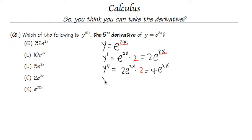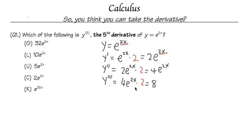For the third derivative, we start with 4e^(2x) and multiply by the derivative of 2x, which is once again 2. You can see a pattern forming here — it's kind of fun. So 4 times 2 is 8, giving us 8e^(2x) for the third derivative.